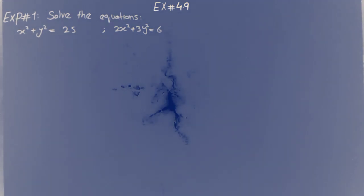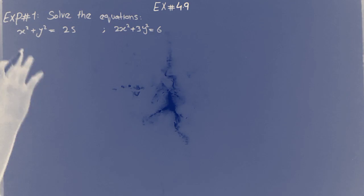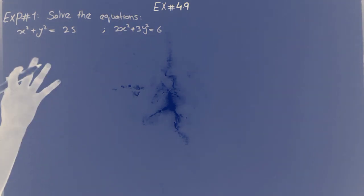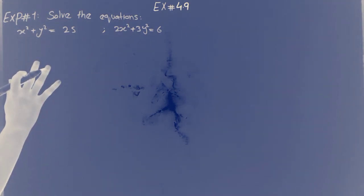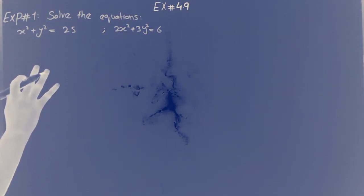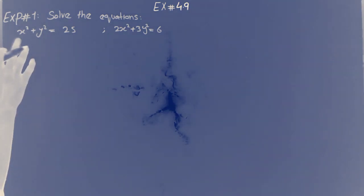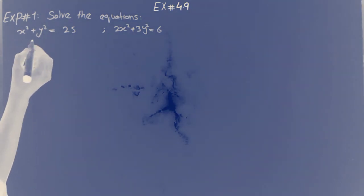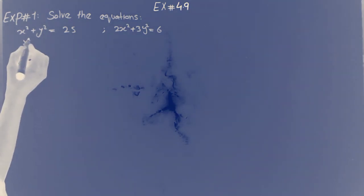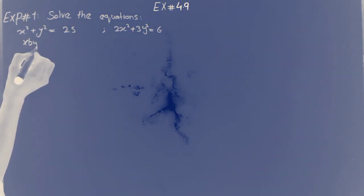We have x-square and y-square, and that gives a linear equation. But it is not simple — this is the law of x-square coefficients. We have the same x-square coefficient and y-square coefficient. When x-square coefficient is 2, we multiply by 2.